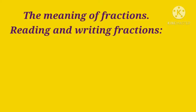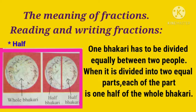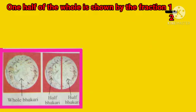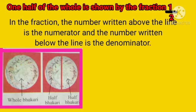The meaning of Fraction — Reading and Writing Fraction. Half: one Bhakri has to be divided equally between two people. When it is divided into two equal parts, each part is one half of the whole Bhakri. You can see in this picture — the whole Bhakri is divided into half, that is one half, meaning the whole Bhakri is divided into two parts. One half of the whole is shown by the Fraction 1 upon 2.